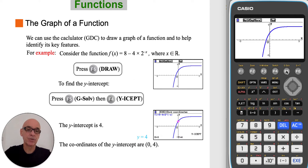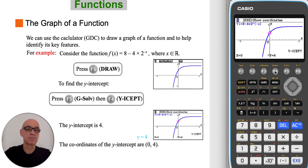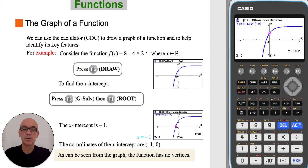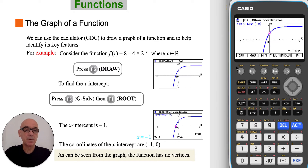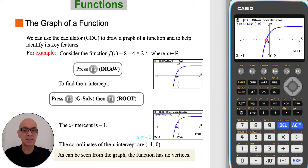To find the y-intercept, press F5 for G-Solve and then F4 for the y-intercept. To find the x-intercept, again press F5 for G-Solve and this time press F1 for root. We see that the x-intercept is negative 1; it has coordinates negative 1 comma 0.